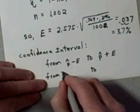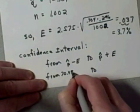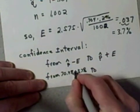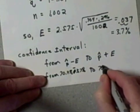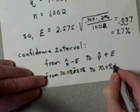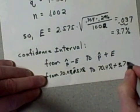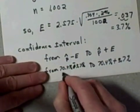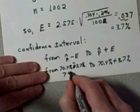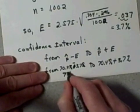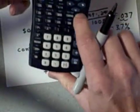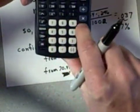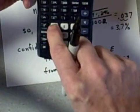So this is going to be 70.4% plus 3.7% or minus in this case - we're minus on this side - to 70.4% plus 3.7%. Let me use my calculator here: 70.4 minus 3.7...